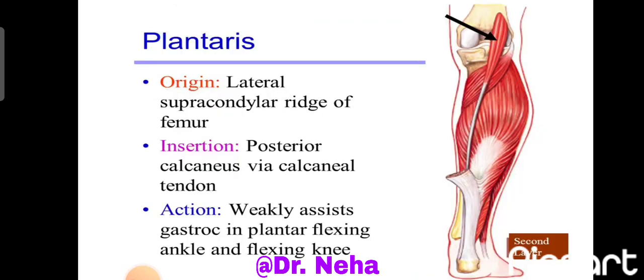Then we have the plantaris muscle. This is a vestigial muscle of the body, arising from the lateral supracondylar ridge of the femur. It is inserted on the posterior aspect of the calcaneum via the calcanean tendon. The action of this muscle is weak plantar flexion of the ankle joint and weak flexion of the knee joint.